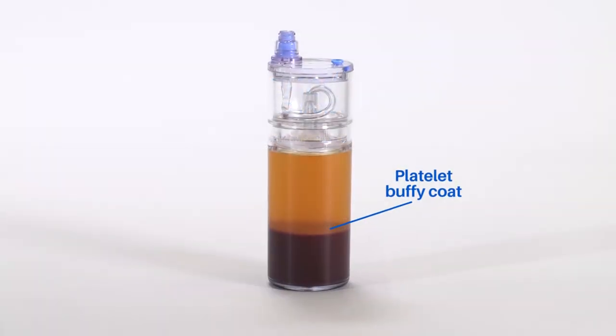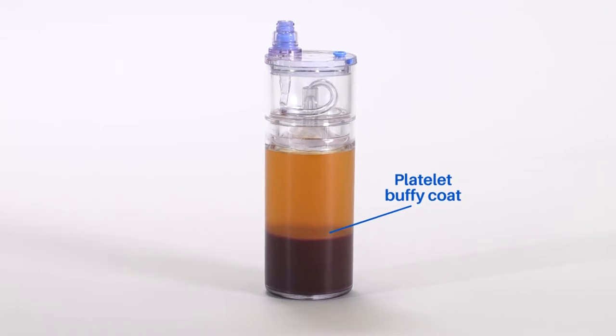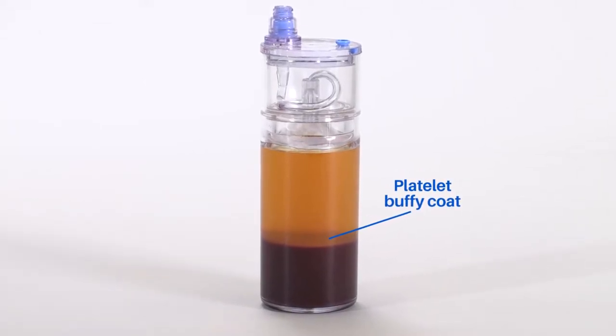After centrifugation, the platelet buffy coat layer will be clearly visible between the plasma and red blood cell layer.